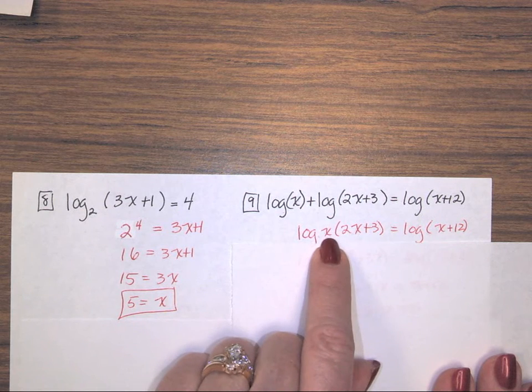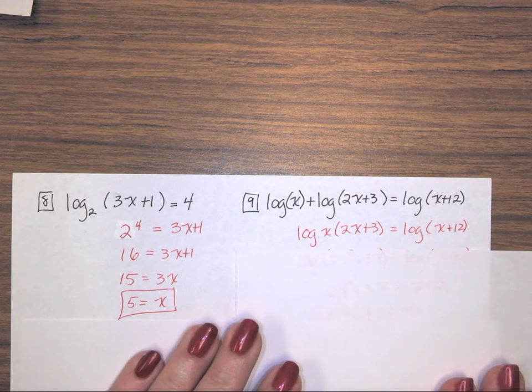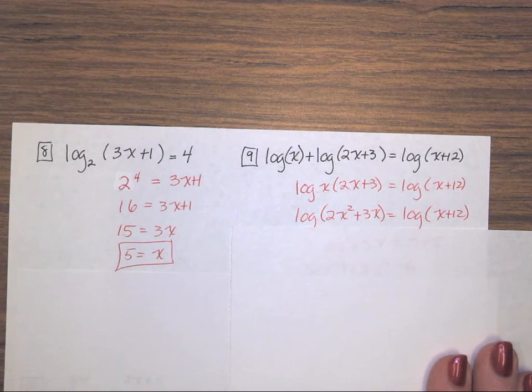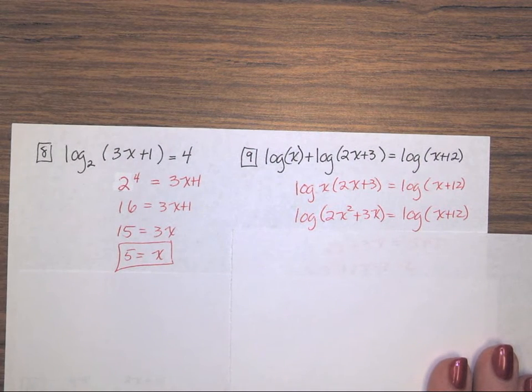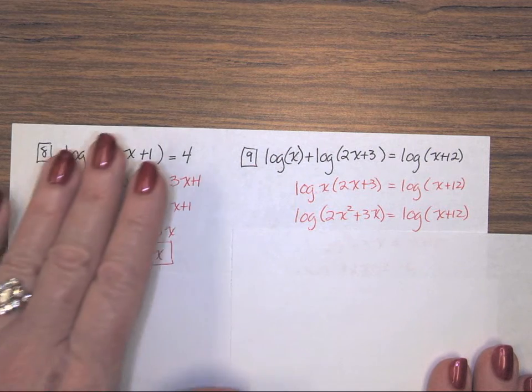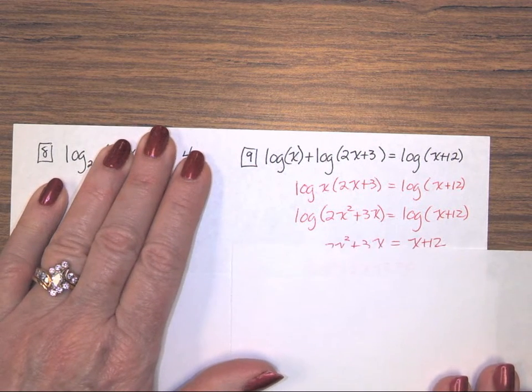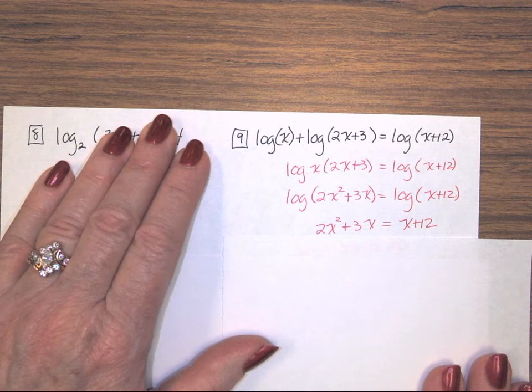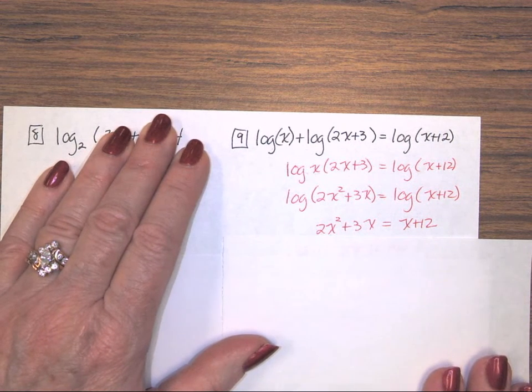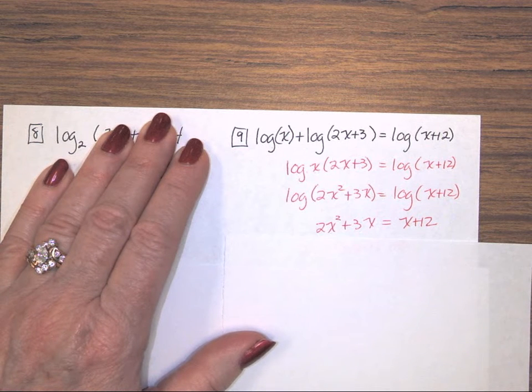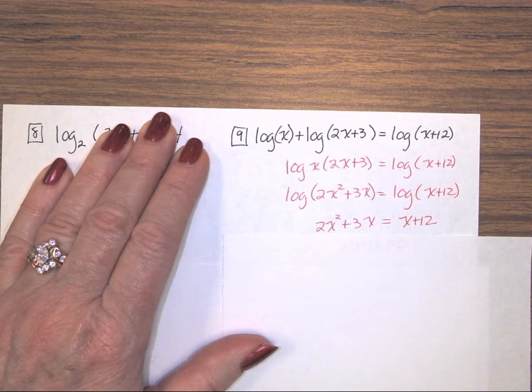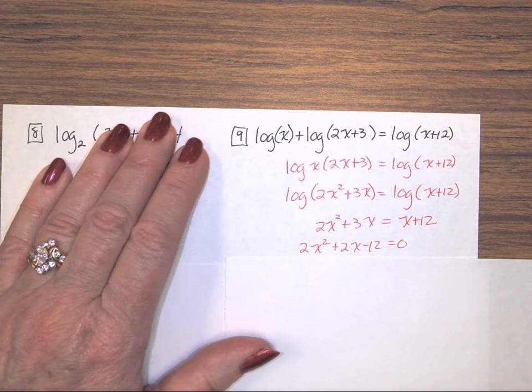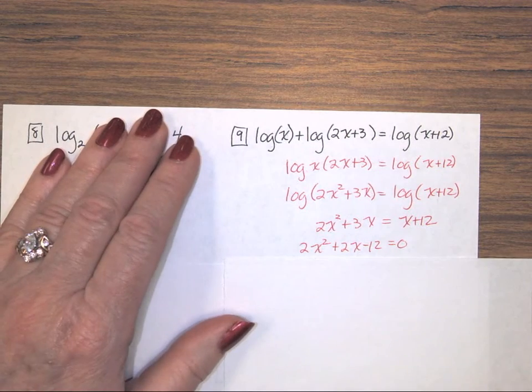So when I multiply x times 2x plus 3, I distribute it over both terms, and I get 2x squared plus 3x. Both sides were log base 10, so I can take and use the base of 10 on both sides to cancel the logs. And it leaves the part that was in parentheses equal to each other. It is going to be quadratic, so I need to move everything to one side of the equation. So I subtract an x to bring it over, I subtract 12 to bring it over, and now I need to factor and solve this quadratic equation.